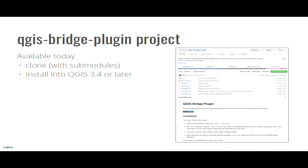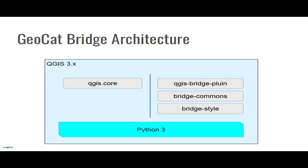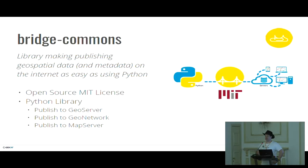It is available today — you can go to the GitHub repository and check it out. Please include all the sub-modules, and you can install it into QGIS 3.4 or later and try it out. Internally, the project uses two Python libraries: Bridge Common and Bridge Style. Bridge Commons is a new open source library for publishing geospatial data and metadata on the internet. It kind of takes the place of GSConfig, an abandoned open source library that was used to publish things to GeoServer. This library can publish to GeoServer and also to MapServer, with greater capabilities and hope to be extended to other platforms.